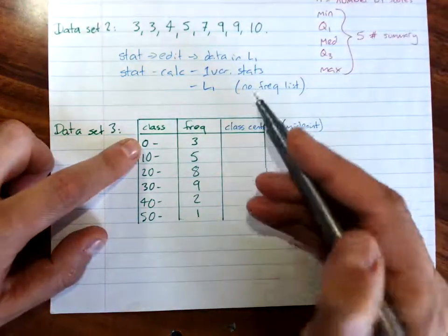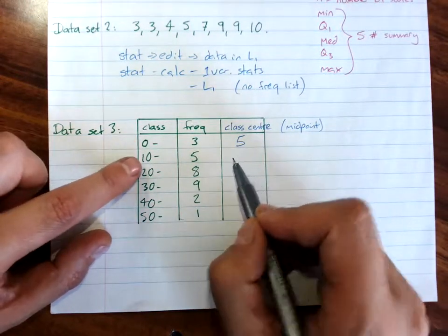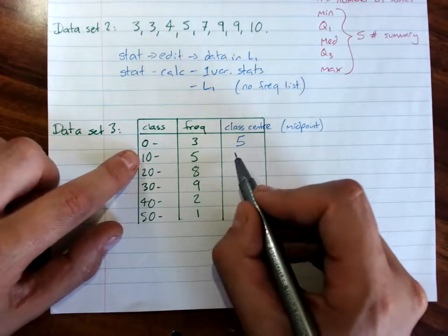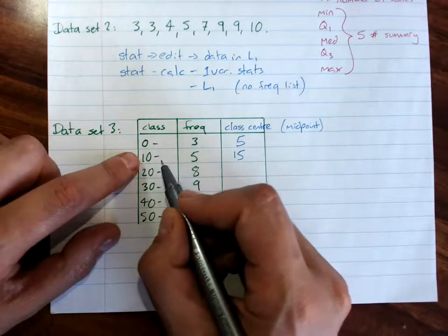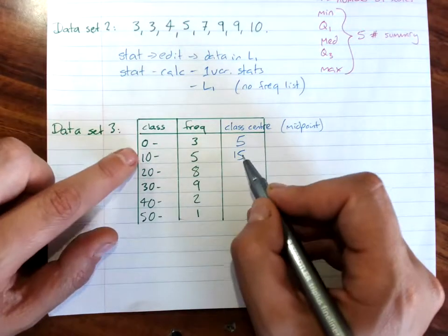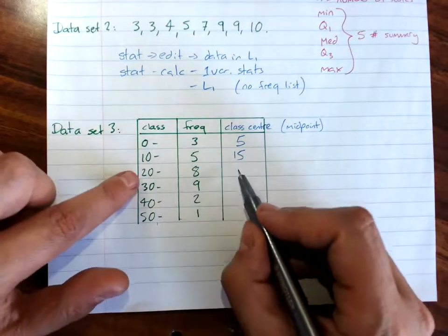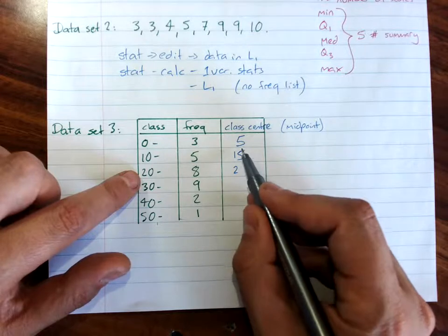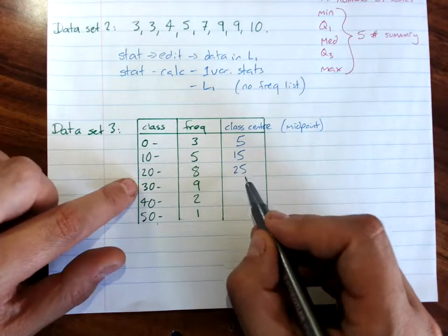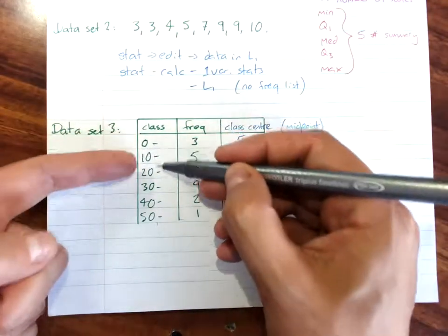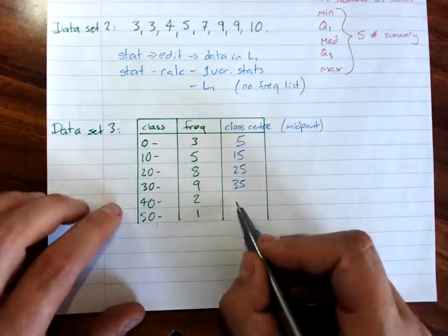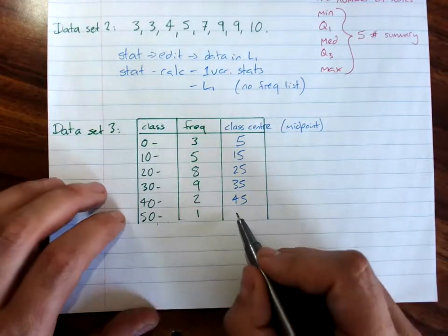I'm sure you can guess where the center of this class is, 10 to 20, it's 15. 10 plus 20 is 30, divided by 2, 15. And you'll see it forms a pattern in the same way as the class does. 5, 15, 25, 35. It goes up by the same amount, so this goes up by 10, this goes up by 10. It's just taking the middle of the class.